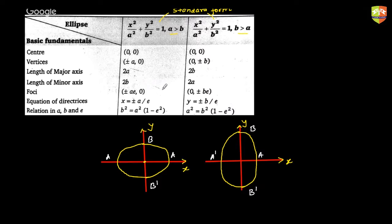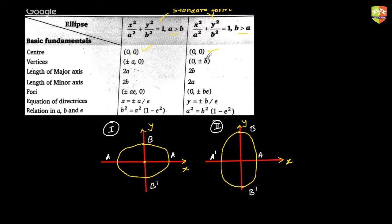A few things to keep in mind: the center for both ellipses is the origin (0, 0). The vertices — called a and a' — for standard form 1 are at (±a, 0), whereas for standard form 2 they are at (0, ±b). The length of the semi-major axis is 'a' for type 1 and 'b' for type 2.